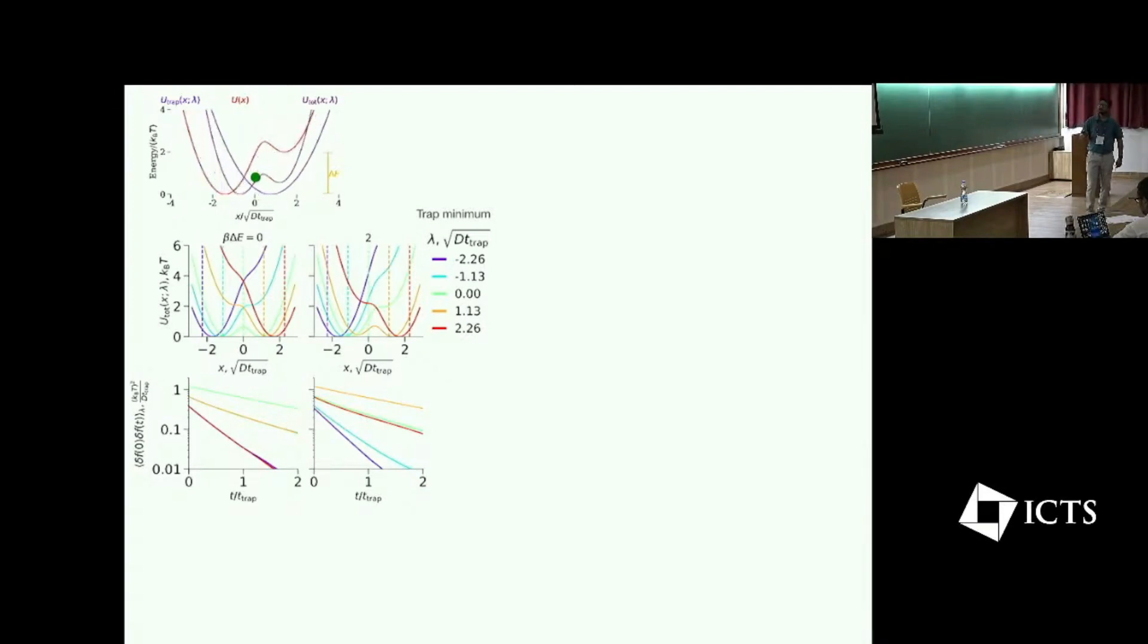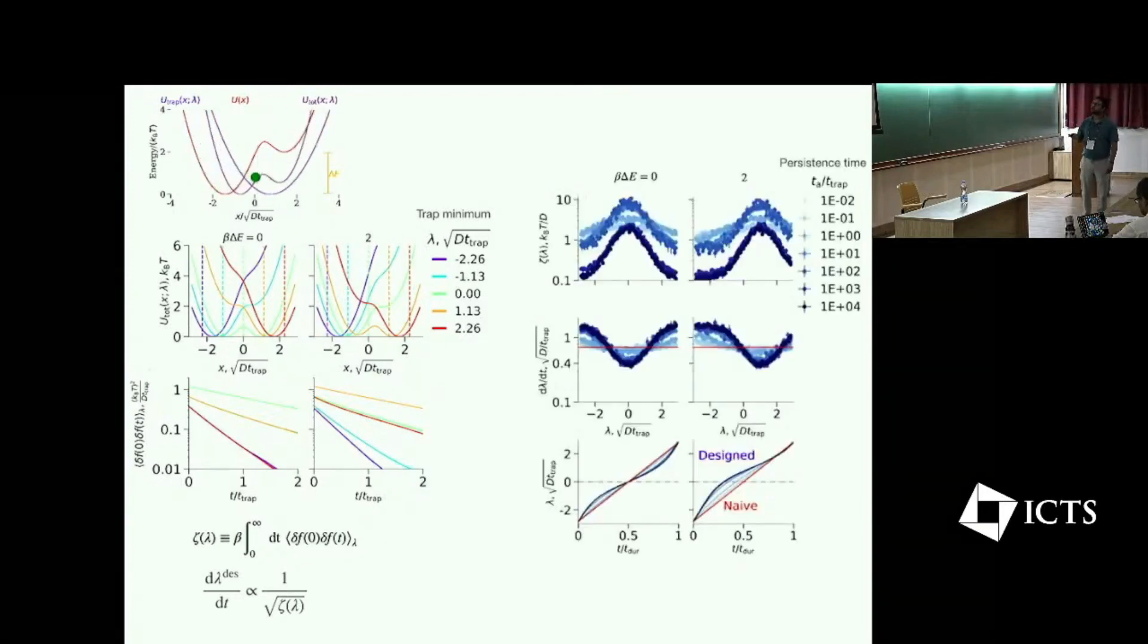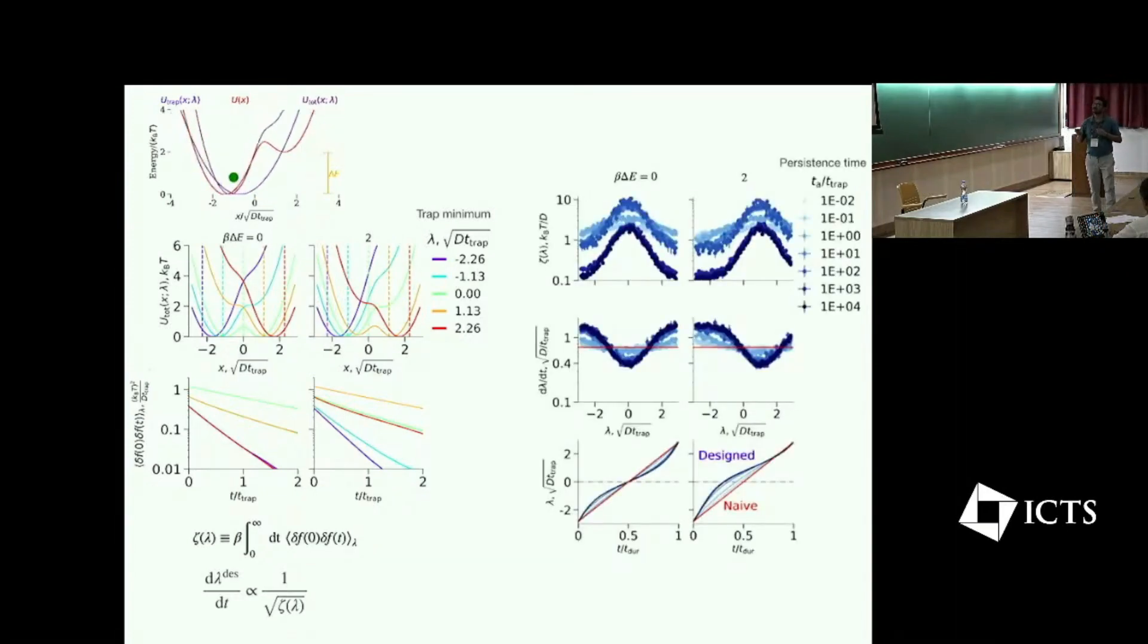So I can keep the trap at different locations. I can measure force fluctuation and with that force fluctuation I can measure the force auto-covariance function. And this force auto-covariance function decays slower for some cases of lambda when the total potential energy has double well kind of behavior. I can put this force auto-covariance function in this formula, I can compute friction coefficient, and with friction coefficient I can compute the optimal protocol speed.